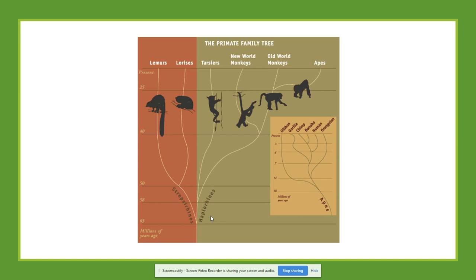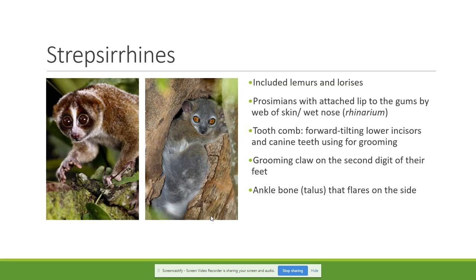What is the difference between strepsirrhines and haplorhines? The strepsirrhines include only the lemurs and the lorises — the prosimians. They have an upper lip attached to the gums by a web of skin, and they also have a wet nose. Because of this web of skin attached to the gums, prosimians don't have facial expressions. We call this attachment a rhinarium. Prosimians also possess a tooth comb, which consists of the forward tilting of the lower incisors and canines, used for grooming.